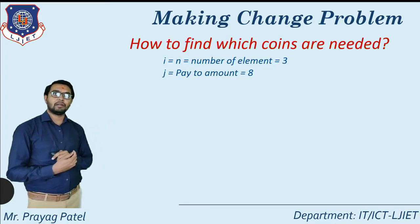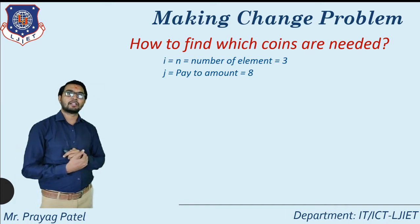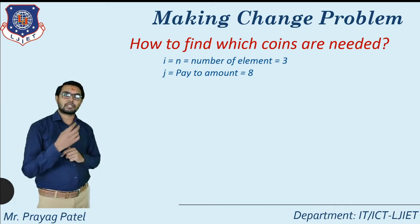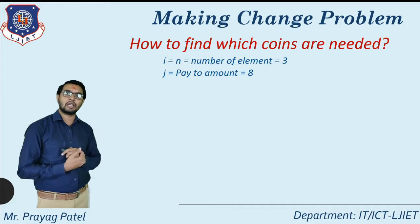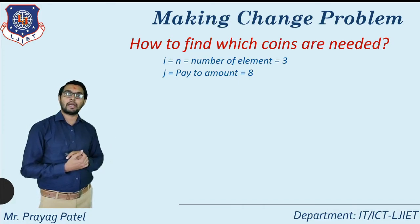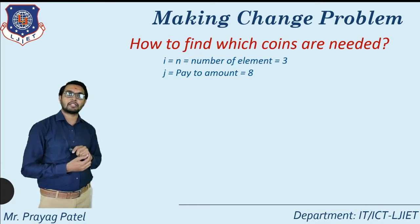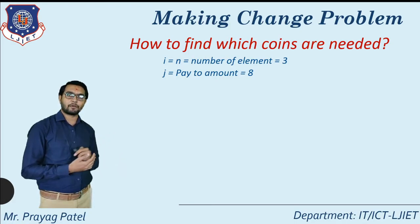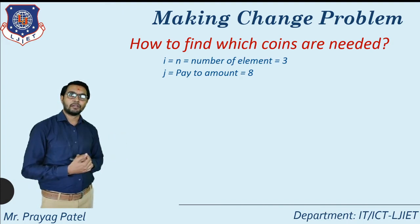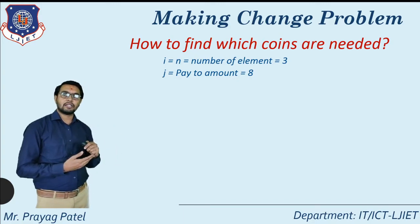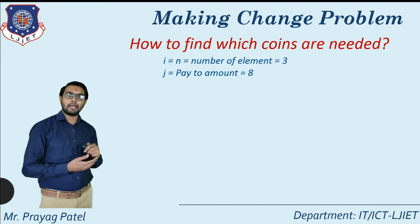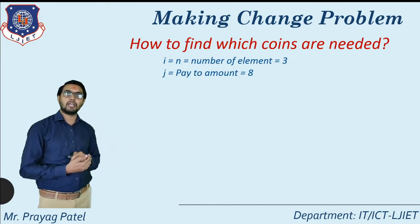To find which coins are needed, we consider i equal to n, meaning we start from the last location. The initial location is considered as C[3][8]. N means the number of elements — the total number of coin denominations in our example is 3, which are 1, 4, and 6. So n equals 3. The value of j means the amount to pay, which is 8. So j equals 8.